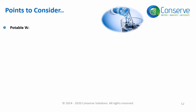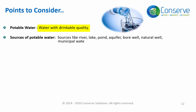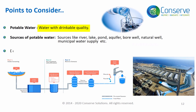Potable water is water with quality acceptable to drink. The sources of potable water generally include natural water sources like rivers, lakes, ponds, and aquifers (that is bore water). In some water stressed places, sea water is desalinated to be consumed as potable water.